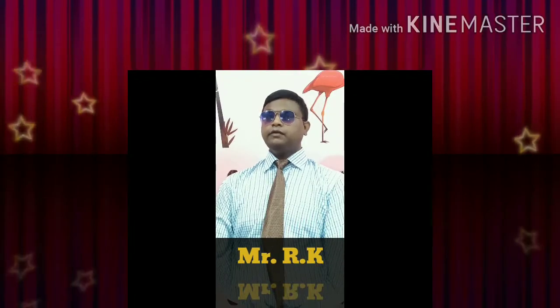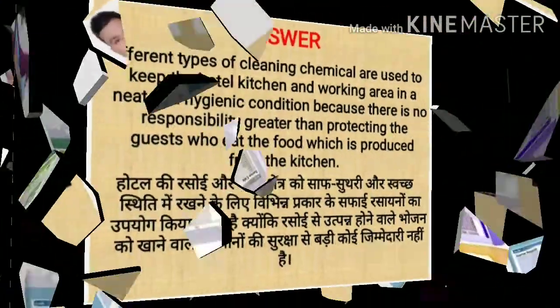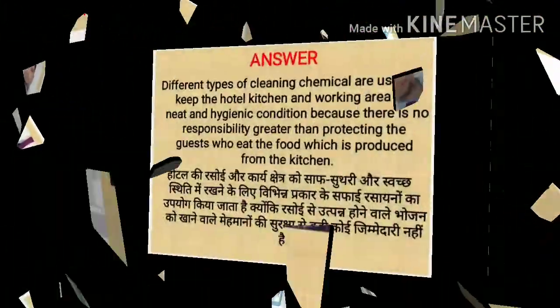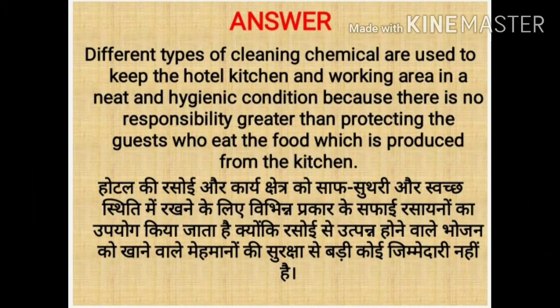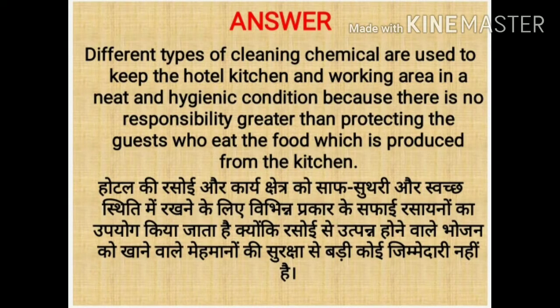Hello guys, welcome to my YouTube channel Chohan Knowledge Guru. Aaj main aapko diversity ke chemical ke baare mein knowledge doonga. So first question is: why we are using chemical in kitchen? The answer is different types of cleaning chemicals are used to keep the hotel kitchen and working area neat and hygienic, because there is no greater responsibility than protecting the guests who eat the food produced from the kitchen.